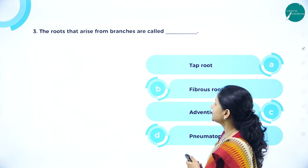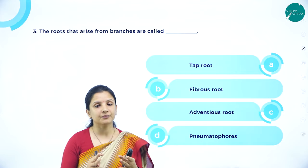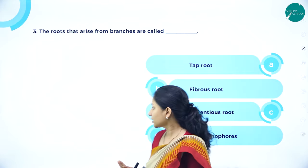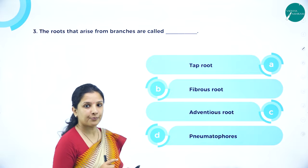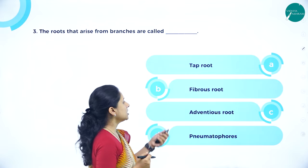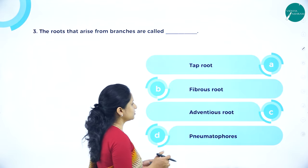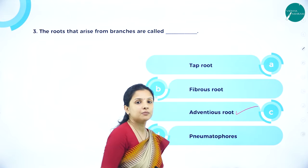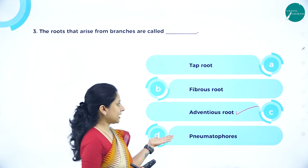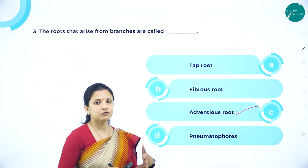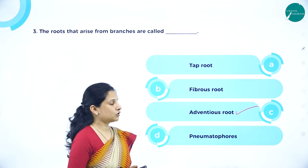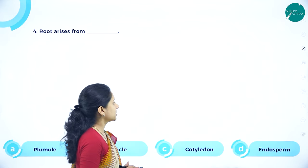Next MCQ: The roots that arise from branches are called — taproot, fibrous root, adventitious roots, or pneumatophores? Taproot arises directly from the radicle. Fibrous root also arises from the radicle. Pneumatophores are found in mangroves, so that is different. The correct answer is adventitious roots, which arise from the branches of banyan trees and give extra support to the growing plant.